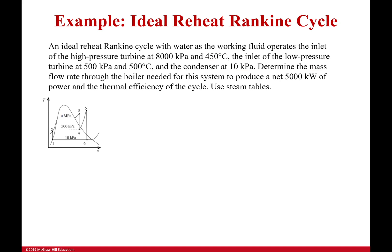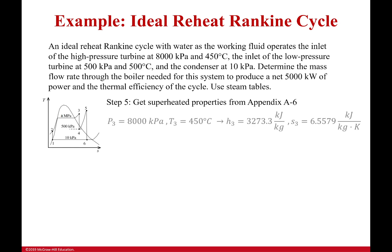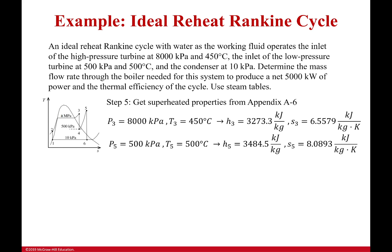Moving on to points 3 and 5 — both are in the superheated vapor table, so it's best to get all their information at the same time. Find the right pressure, go down to the temperature, then read across to get enthalpy and entropy. I'm getting entropy because this is an isentropic turbine, which means entropy at state 3 equals entropy at state 4, and entropy at state 5 equals entropy at state 6. I'll use those to find quality and then enthalpy at the mixed states.